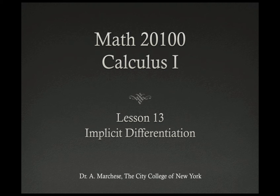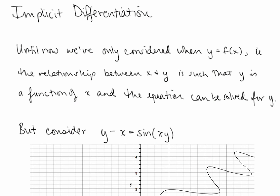This is lesson 13 in our Calculus 1 series: Implicit Differentiation. In the past few lessons we've been talking about the slope of a curve and the slope of the tangent line to the curve at a particular point, but we've only been considering the case when y is a function of x, when the equation between x and y can be explicitly solved for y.